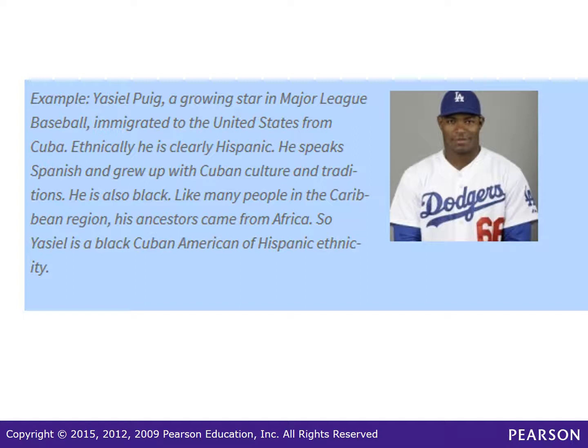For example, Yasiel Puig, a growing star in Major League Baseball, immigrated to the United States from Cuba. Ethnically, he is clearly Hispanic. He speaks Spanish and grew up with Cuban culture and traditions. But he is also Black. Like many people in the Caribbean region, his ancestors came from Africa. So, Yasiel is a Black Cuban-American of Hispanic ethnicity.